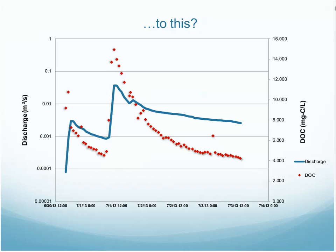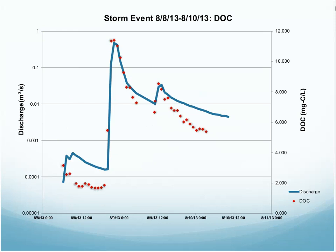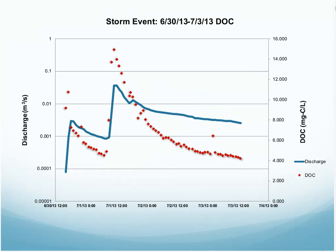Let's look at DOC, or dissolved organic carbon. The blue line represents the discharge data over the course of that storm. This storm lasted for approximately three days, starting on June 30th and running to July 3rd, so the ISCO ran three complete cycles. This is the data for the July 1st storm, and this is the data for the other large rain event — the August 8th event, which also had the ISCO run for three cycles. We see with both of these storms that DOC flushes consistent with the discharge.